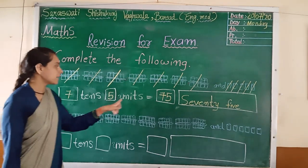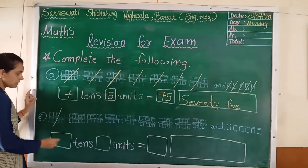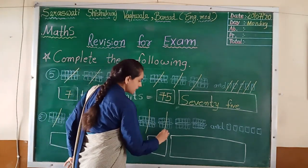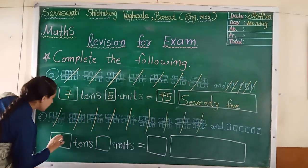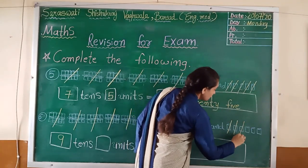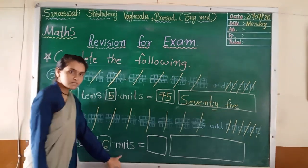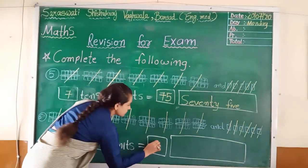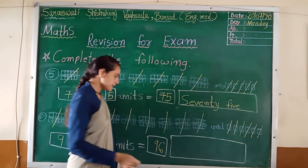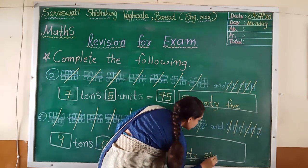Now sixth number. Count: one ten, two tens, three tens, four tens, five tens, six tens, seven tens, eight tens, nine tens. So here we have to write nine. Nine tens. Blank units — count: one, two, three, four, five, six. Six units. Nine tens, six units. The number is 96. The spelling of 96 is N-I-N-E-T-Y-S-I-X. So here we have to write 96.